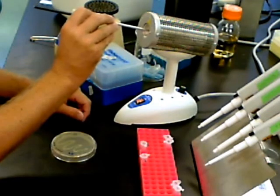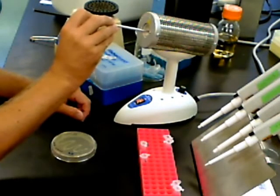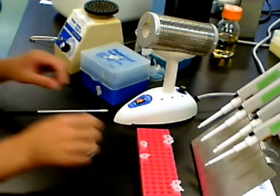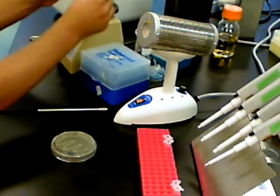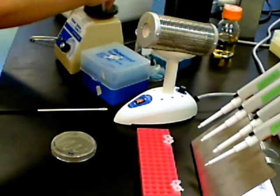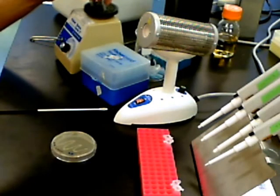After you've added the cells to the Eppendorf tubes, cap them pretty good and stick them on the vortex machine so that the cells can be completely suspended in the calcium chloride.